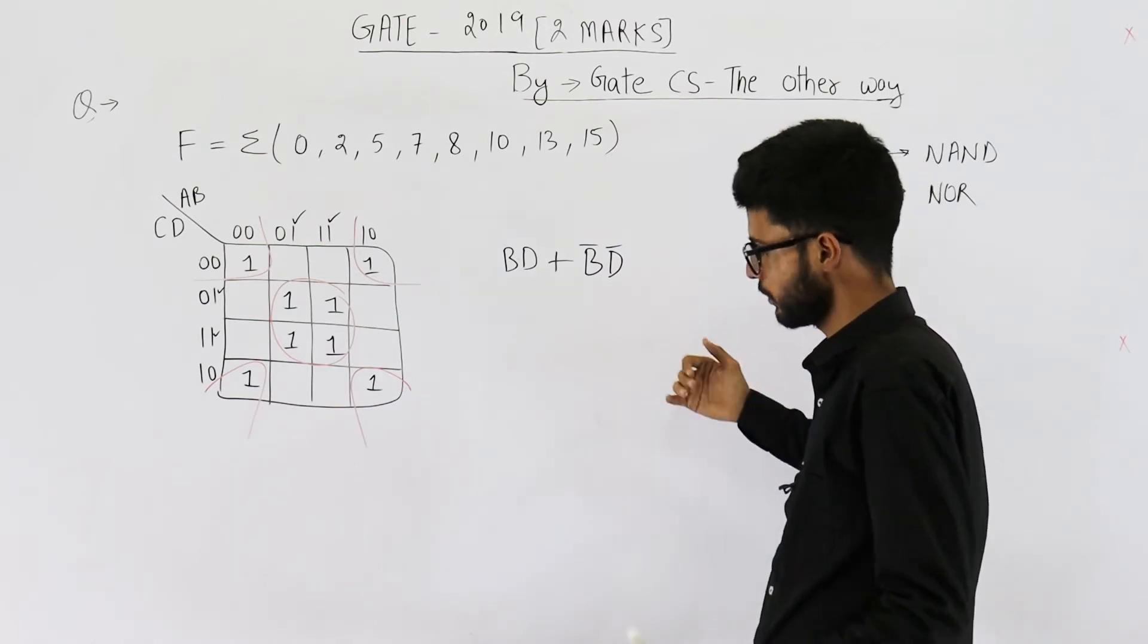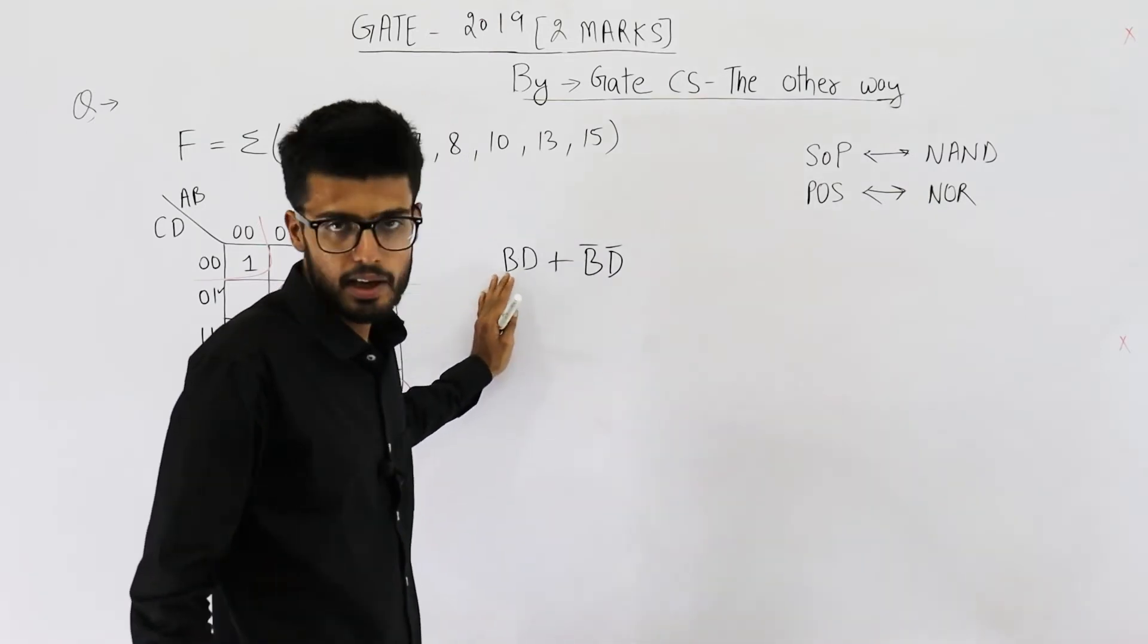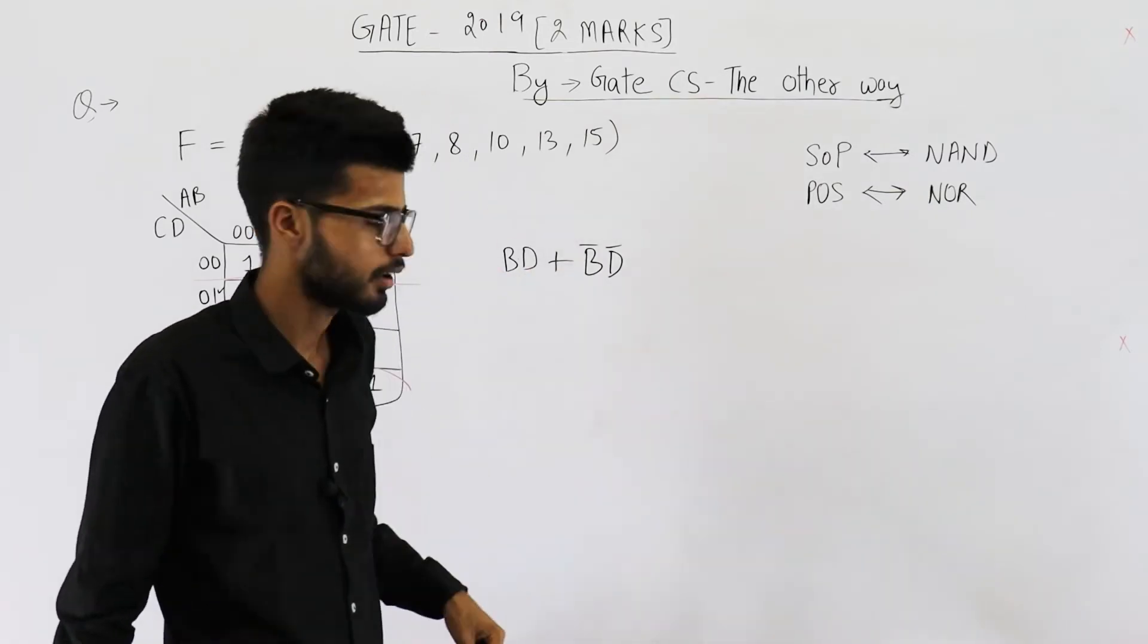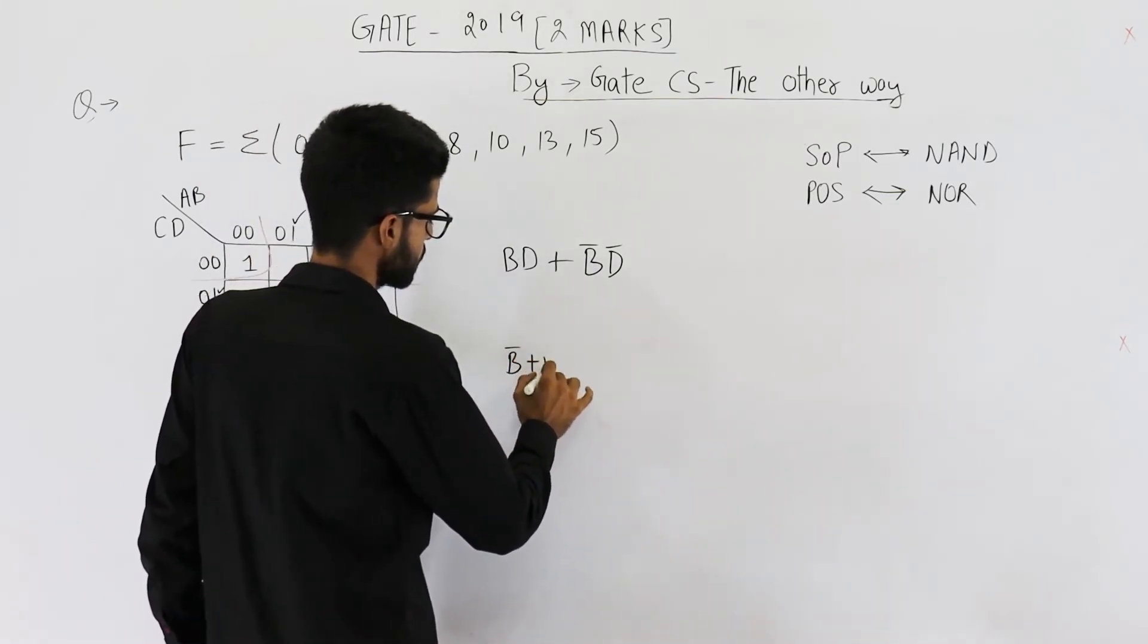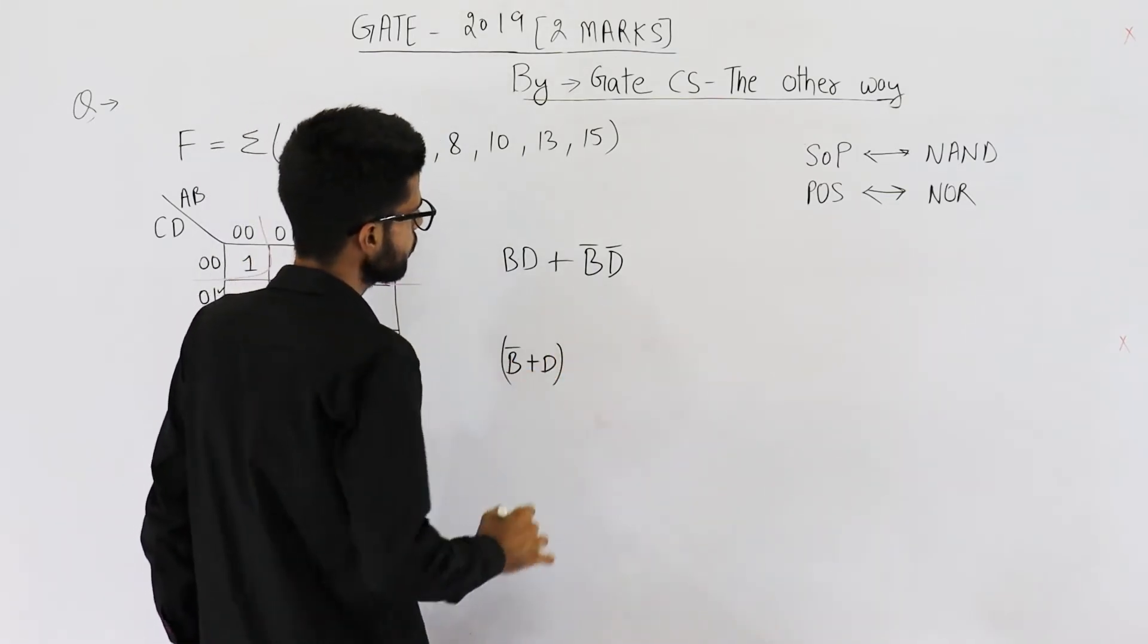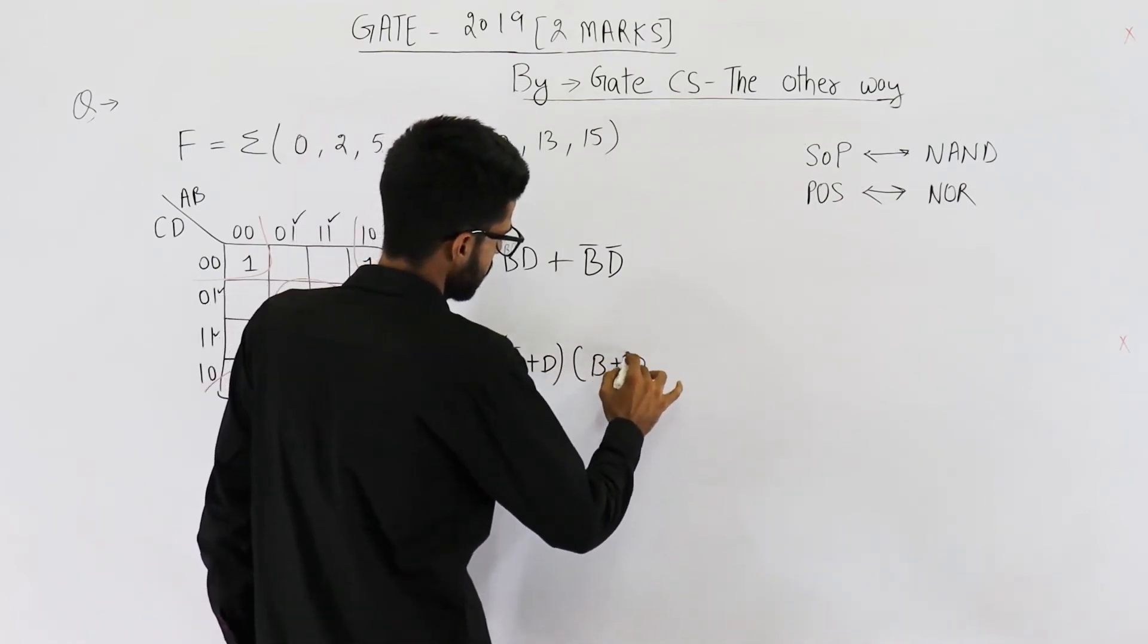Second thing that you could do that I personally prefer is you just get the SOP form then convert it into POS. So let's convert it into POS. POS will be B bar plus D into B plus D bar.